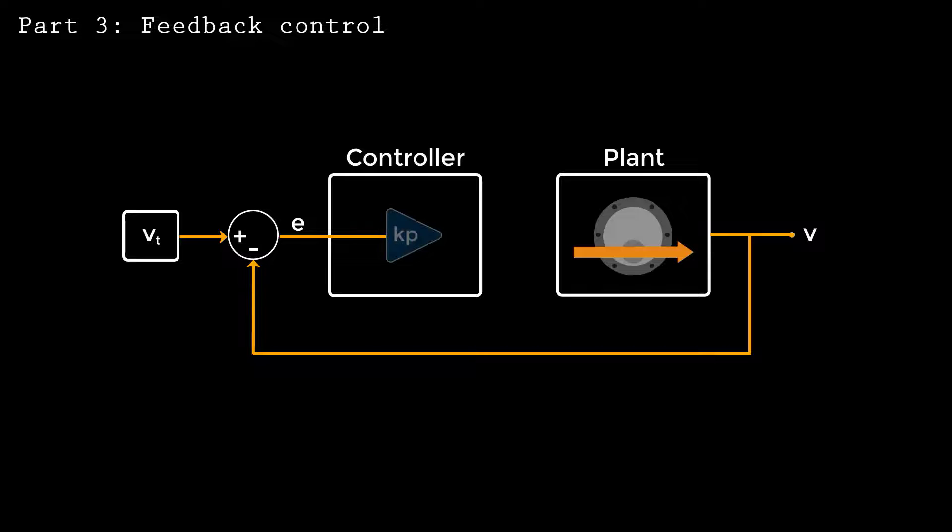We can summarize the proportional controller using a block diagram. For velocity control, the controlled object, known as the plant, is the motor and motor driver. The output of the motor is the current speed V. The target speed is Vt. The difference between Vt and V produces the error E. The proportional controller simply multiplies E by the gain Kp to generate the control signal U. The value of U determines the magnitude and sign of the voltage applied to the motor.